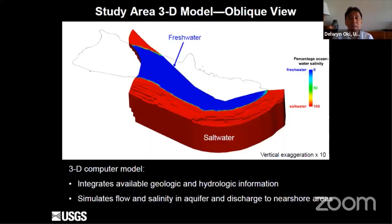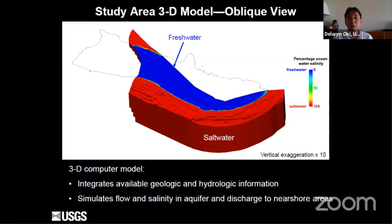A groundwater model is basically a computer model that solves the equation of groundwater flow many times over space and over time. These groundwater models integrate available geologic and hydrologic information. This particular model is capable of simulating both flow and salinity changes in the aquifer, and we're able to quantify how groundwater discharge to nearshore areas might be affected if we start pumping additional groundwater.